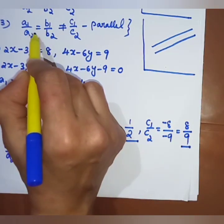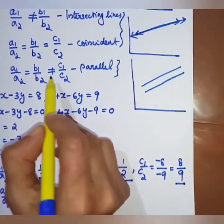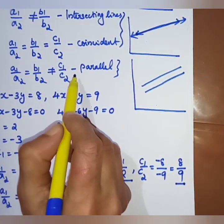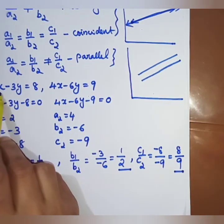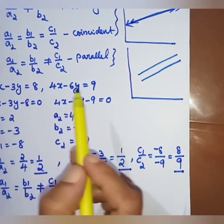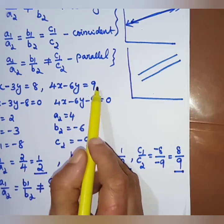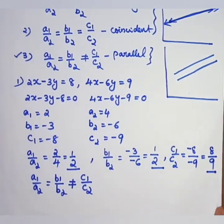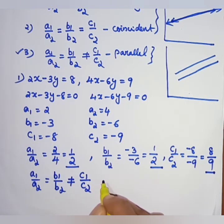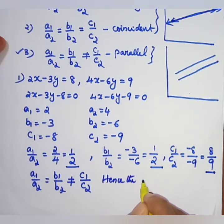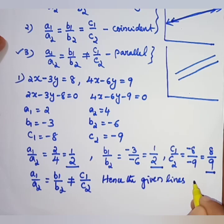Since a1/a2 = b1/b2 ≠ c1/c2, the lines are parallel. The two lines 2x − 3y = 8 and 4x − 6y = 9 are parallel lines. Hence, the given lines are parallel.